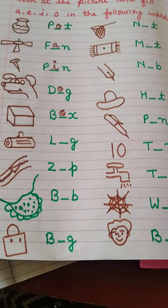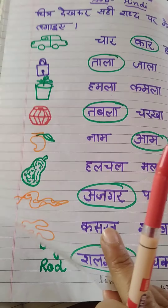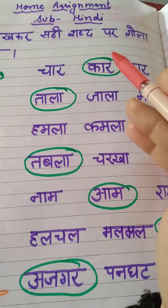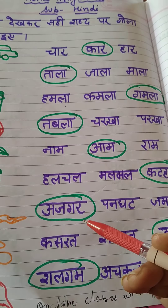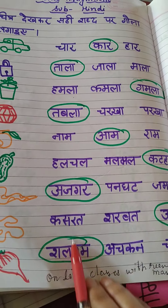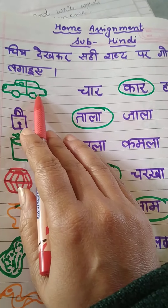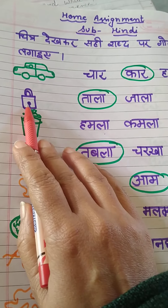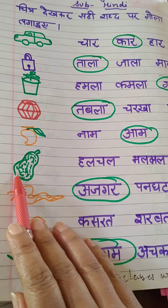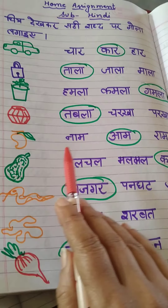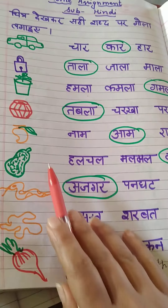And now see your Hindi work. Hindi work में आज आपको दो अक्षरों के जोड़ वाले शब्द, तीन अक्षरों के जोड़ वाले — इसमें आ की मात्रा — और चार अक्षरों के जोड़ वाले शब्द हैं। जो आज आप चित्र देखकर सही अक्षर पर गोला लगाएंगे। जैसे कि ये क्या है? कार — जिसमें हम बैठ कर जाते हैं। ताला, गमला, तबला, आम, कटहल — जो कटहल की सब्जी बनाते हैं — अजगर, और अदरक। तो आप सही picture को गोला बनाएंगे।